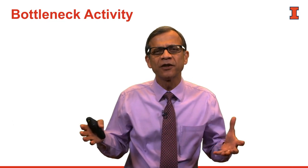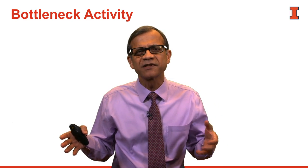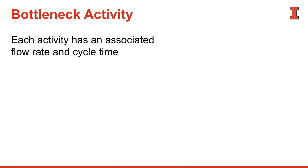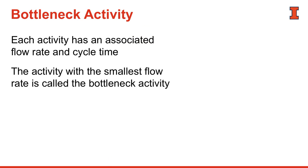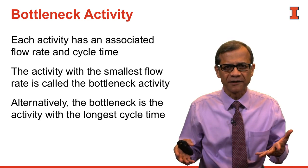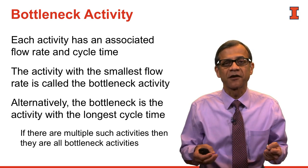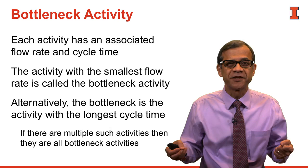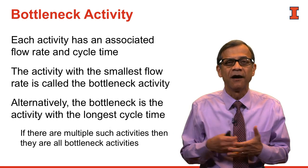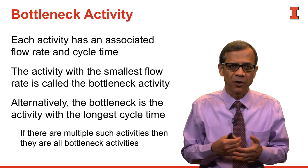Once we have looked at all the activities, we notice that certain activities have larger cycle times or smaller flow rates than others. The activity with the smallest flow rate — equivalently, the longest cycle time — is called the bottleneck activity. It's possible that multiple activities share the largest cycle time, in which case all of them are called bottleneck activities.